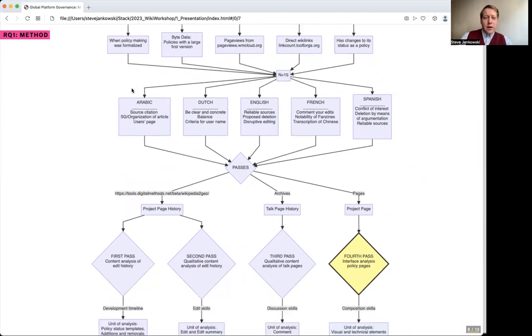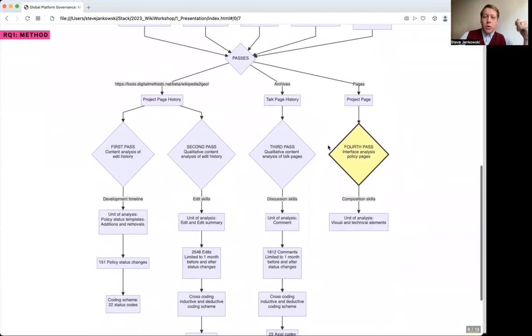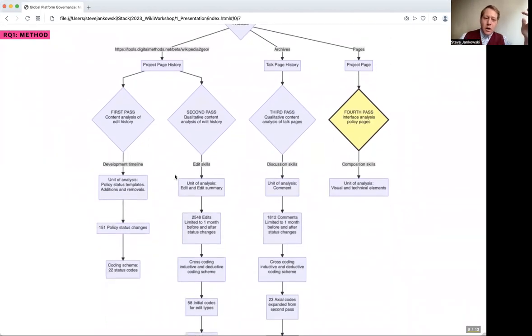From that, we came up with these three policies per edition, and we wanted to examine them through four different ways. The first one is a straightforward content analysis of the edit history, looking for templates and changes to the status of the policy. We found 151 policy status changes from all 15, and we used 22 codes to identify what those changes are, usually just using the actual templates that are used in wiki-text as the codes.